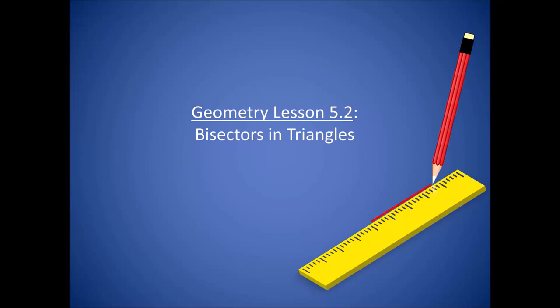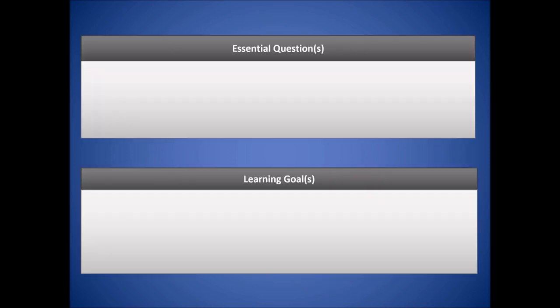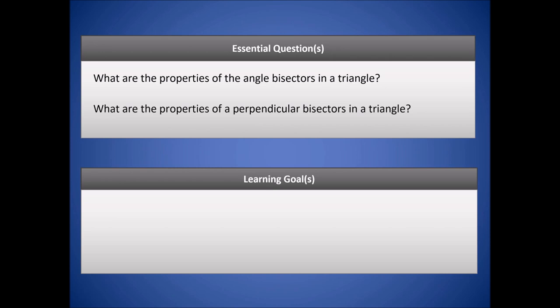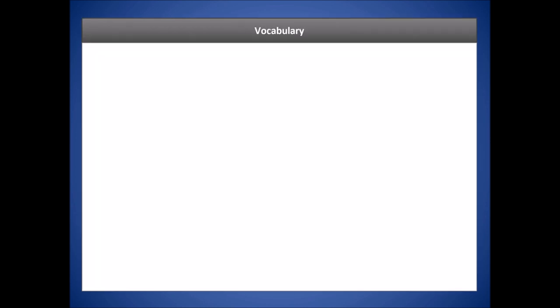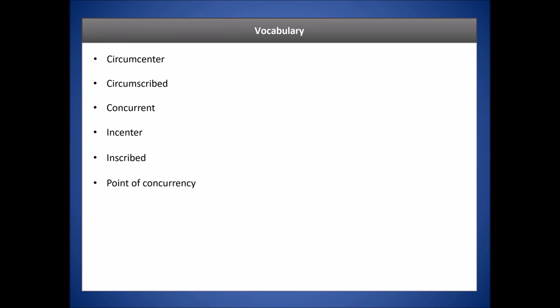Hello class, welcome to Geometry Lesson 5.2. Today we're going to talk about bisectors in triangles. The essential questions are: what are the properties of angle bisectors in a triangle, and what are the properties of perpendicular bisectors in a triangle? Our learning goal is to use these triangle bisectors to solve problems and prove related theorems. Vocabulary for today includes circumcenter, circumscribed, concurrent, incenter, inscribed, and point of concurrency.